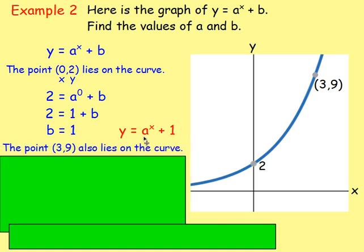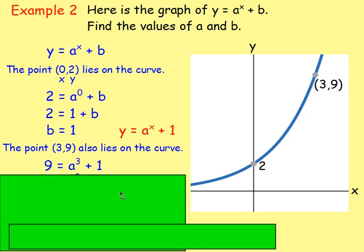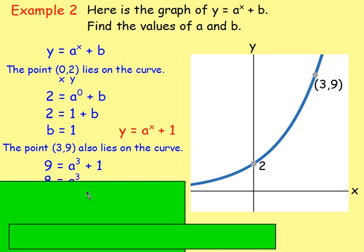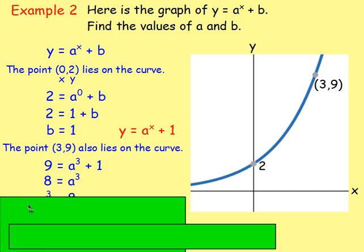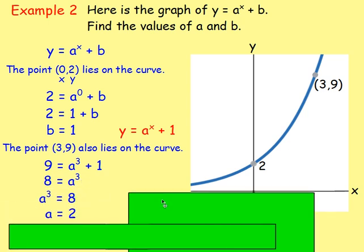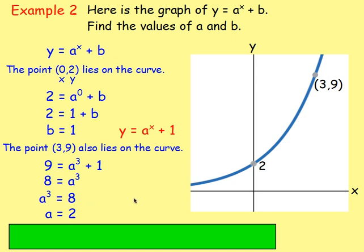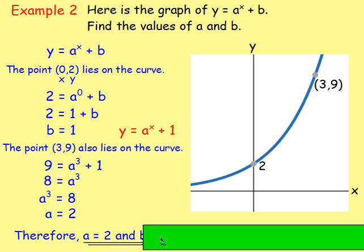From there, we still want to find the value of a. We know the point (3, 9) also lies on the curve, so we substitute in the 3 and the 9. Replace y with 9 and x with 3: 9 equals a to the power of 3 plus 1. Subtract 1 from both sides and we get a cubed equals 8. Taking the cube root, a equals 2, since 2 times 2 times 2 is 8.